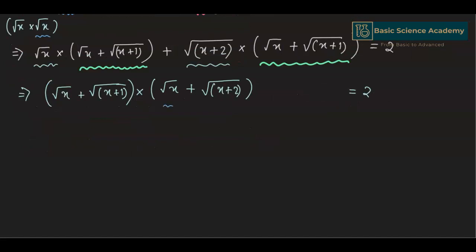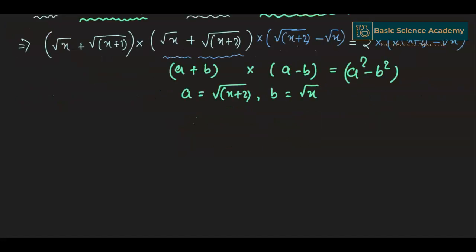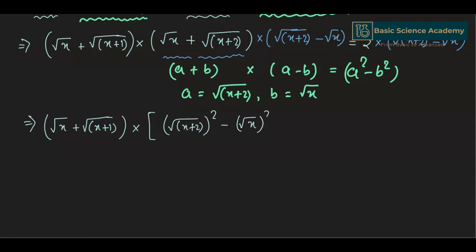We can remove the factor (square root of (x+2) + square root of x) by multiplying both sides of the equation by its conjugate: square root of (x+2) minus square root of x. This is in the form of (a+b)(a-b) where a equals square root of (x+2) and b equals square root of x. This equals a squared minus b squared, giving us (square root of x + square root of (x+1)) multiplied by (x+2 - x), which equals 2 times square root of x.